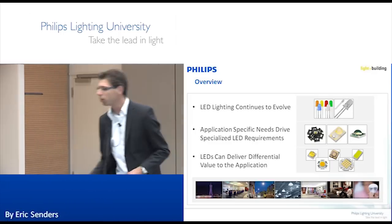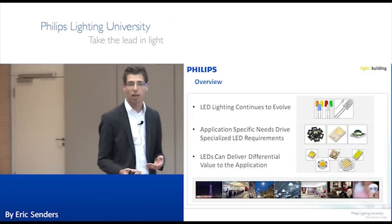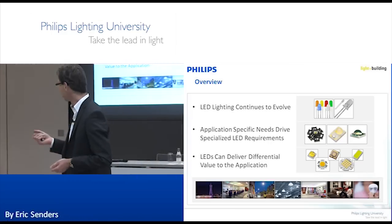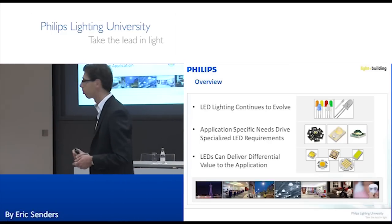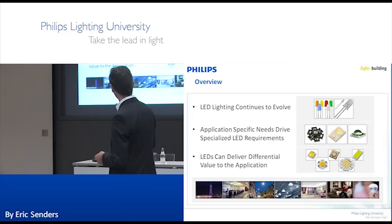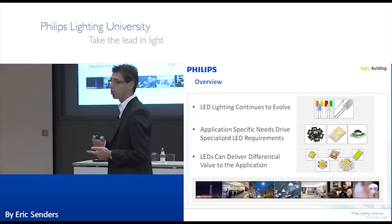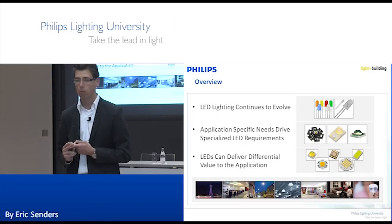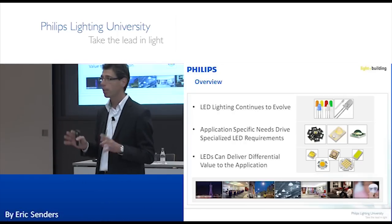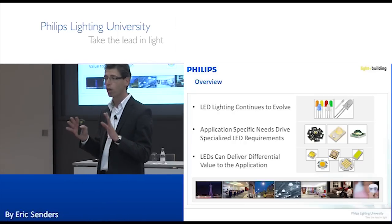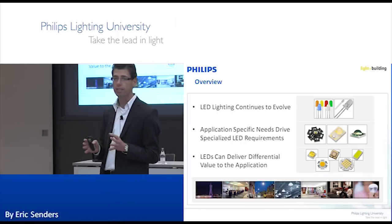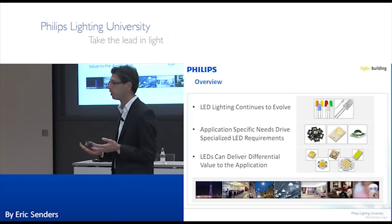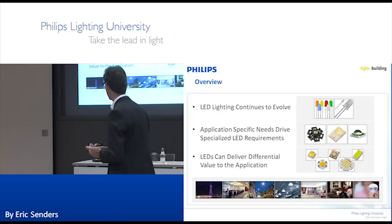Five-millimeter LEDs were basically used for indicator lamps and for remote controls on TVs, for example. About 10 years ago, the first one-watt LED was introduced into the market, which made it possible to go into general lighting and replace conventional lighting.